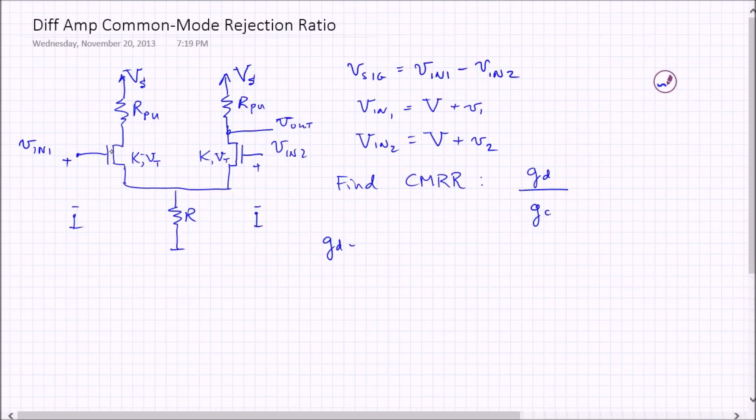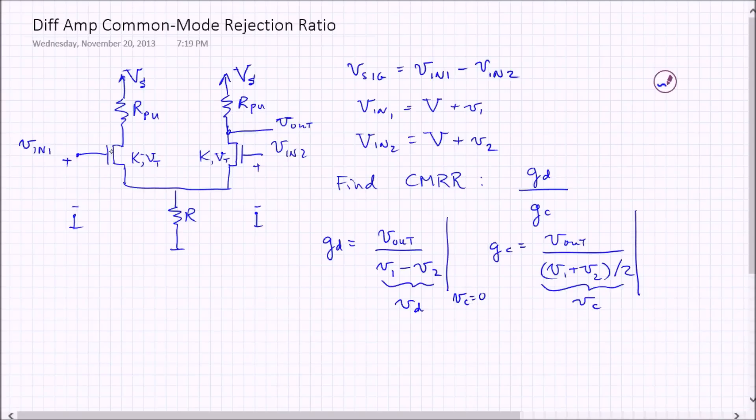Which is the small signal gain for the differential mode of input divided by the common mode of input. What do each of these mean? The gain for the differential mode is basically what is Vout divided by V1 minus V2. I will call that V little d. And the common mode is Vout over V1 plus V2 over 2. This is Vc. But this is going to be this under the condition that Vc is 0, and it's going to be this under the condition that Vd is 0.